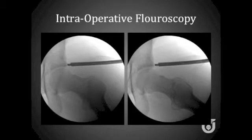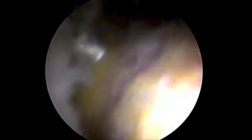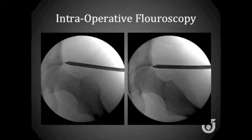Intraoperative fluoroscopy can be helpful as a second check to evaluate the depth of resection. Once happy with the rounding of the head-neck junction, the hip is once again flexed to relax the capsule and bring the femoral neck into view. This bone is planed down to restore the head-neck offset. Once the bulk of the bone has been removed, the burr can then be used on reverse to quickly buff the area of the resection to smooth down the edges. Intraoperative fluoroscopy in multiple planes is then used to confirm an adequate resection.